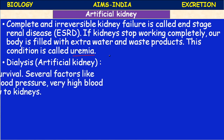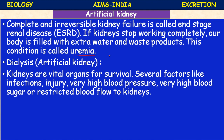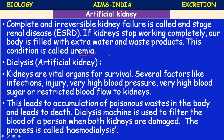The kidneys are vital organs for survival. Several factors like infections, injury, very high blood pressure, very high blood sugar, restricted blood flow, or blockages preventing blood flow to the kidneys can lead to accumulation of poisonous nitrogenous wastes in the body, which become toxic and may even lead to death. A dialysis machine is used to filter the blood when both kidneys are damaged.